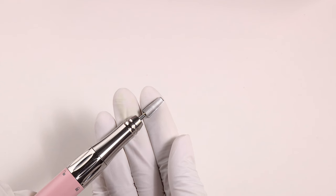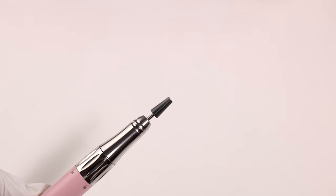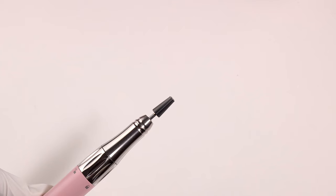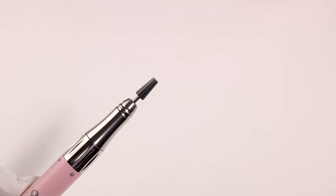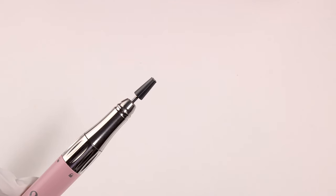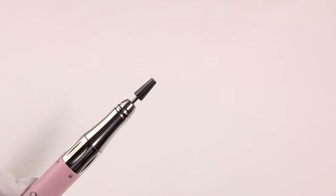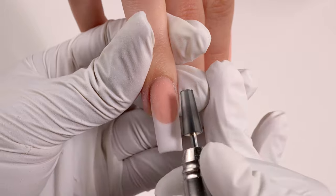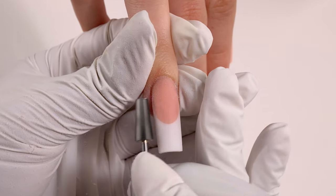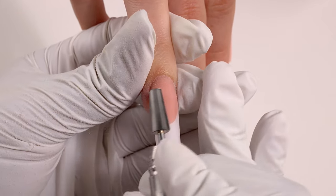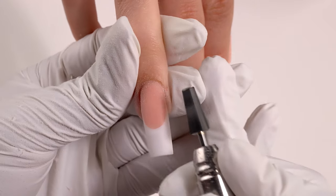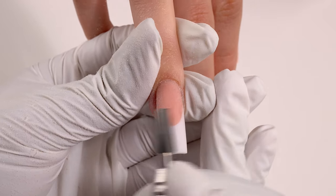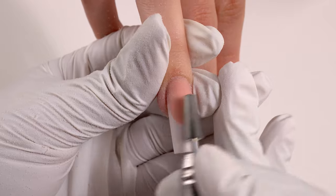Now if you are a professional and you want to speed up this process, you can use an e-file. I'm using my Beyond Pro e-file with a five-in-one fine bit. This bit is perfect for surface work because it's going to gently file the surface of the nail without removing too much product. When you're doing this, remember you want to keep your e-file parallel to the nail and just lightly feather over it. We just want to smooth out the nail surface here and remove any little bumps; we don't actually want to remove any product.